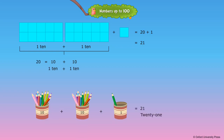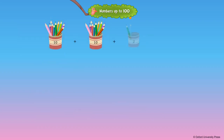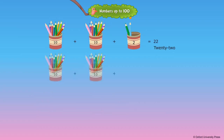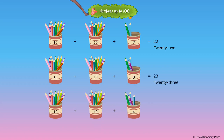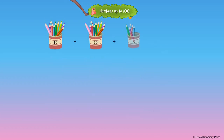20 plus 1 is equal to 21. 20 plus 2 is equal to 22. 20 plus 3 is equal to 23. 20 plus 4 is equal to 24. 20 plus 5 is equal to 25.